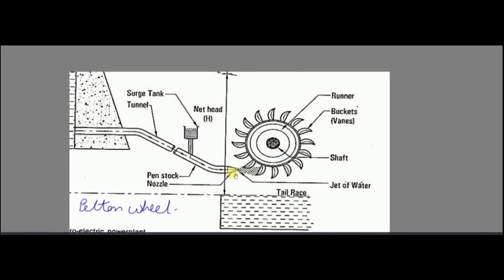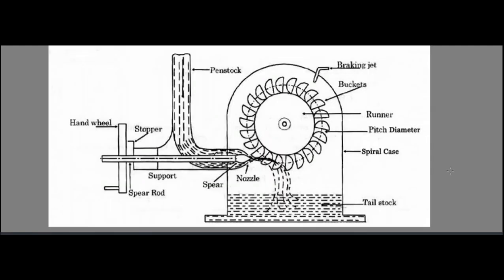Fixed blades and moving blades are also associated with reaction turbines. Now let's start with the Pelton wheel, which is an impulse turbine. In an impulse turbine, we have only kinetic energy at the inlet. The system consists of a reservoir, a penstock, a surge stack, water coming out of the nozzle impacting on the blades of the runner, and finally the water dumps into the tailrace or sink.